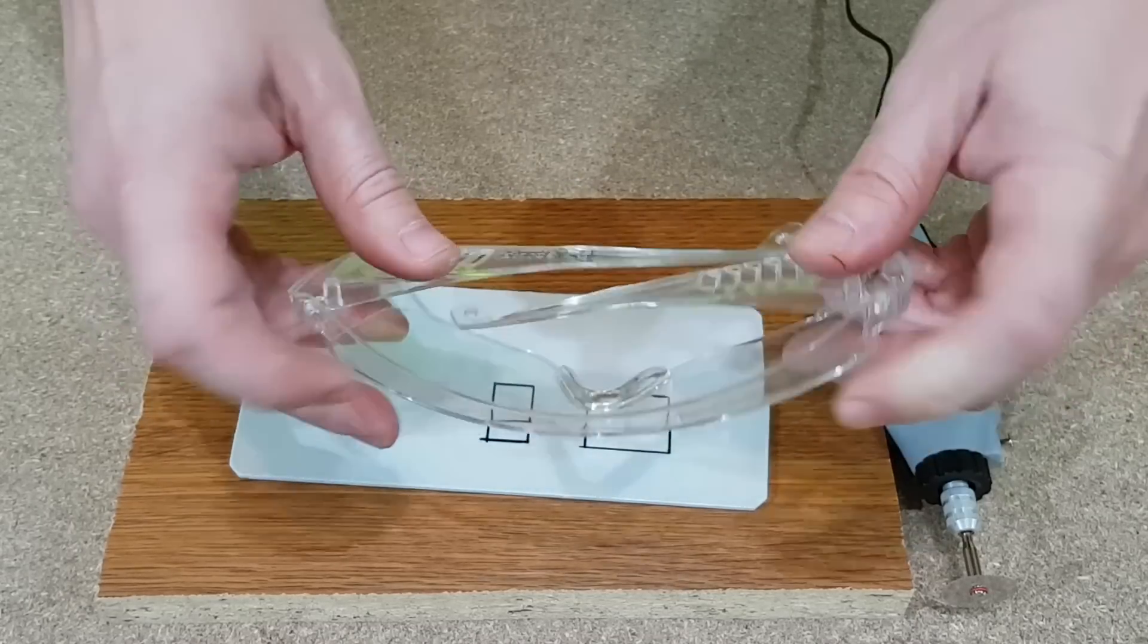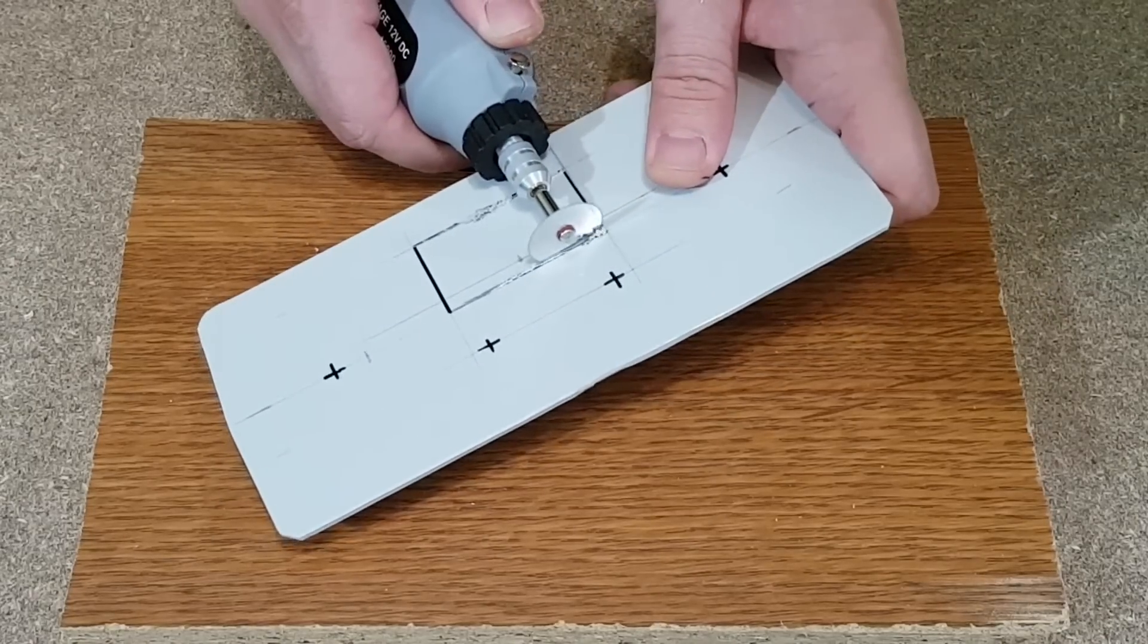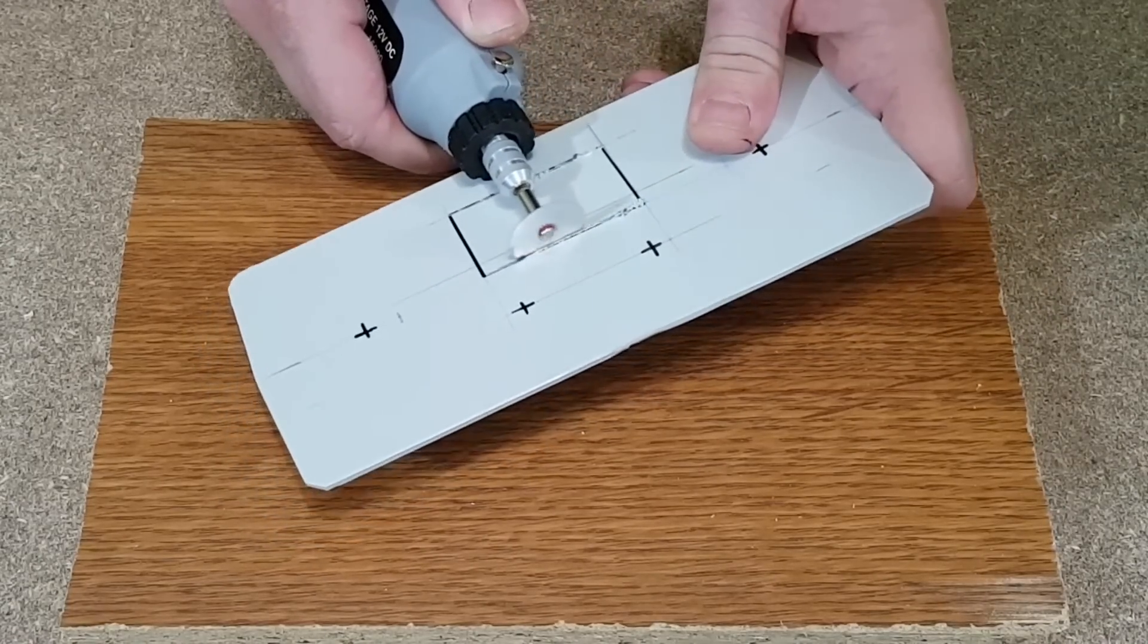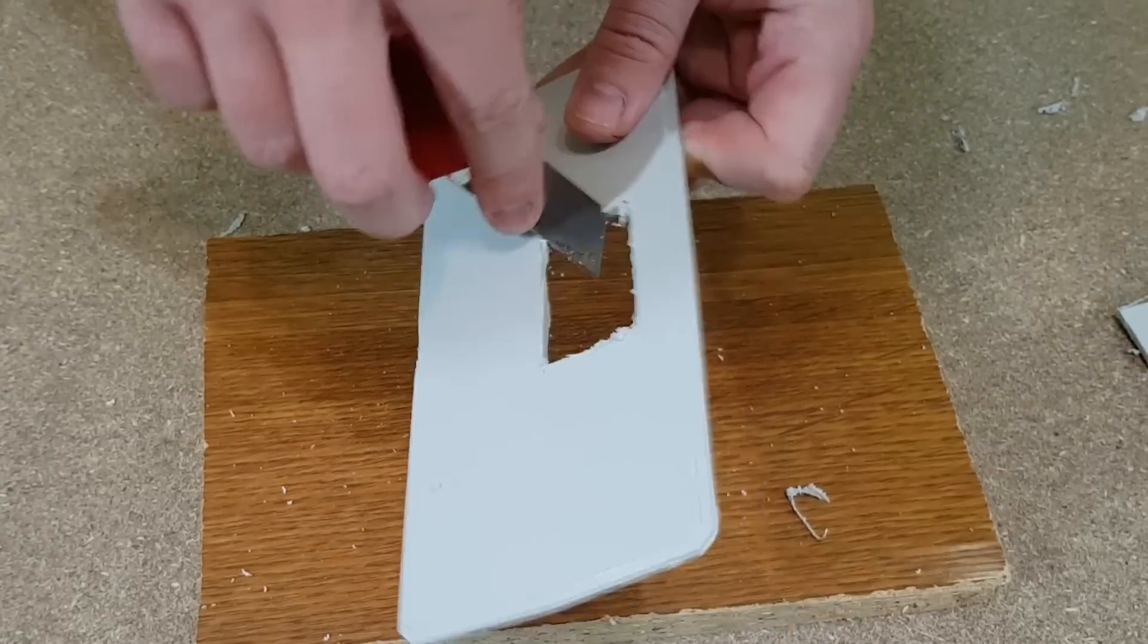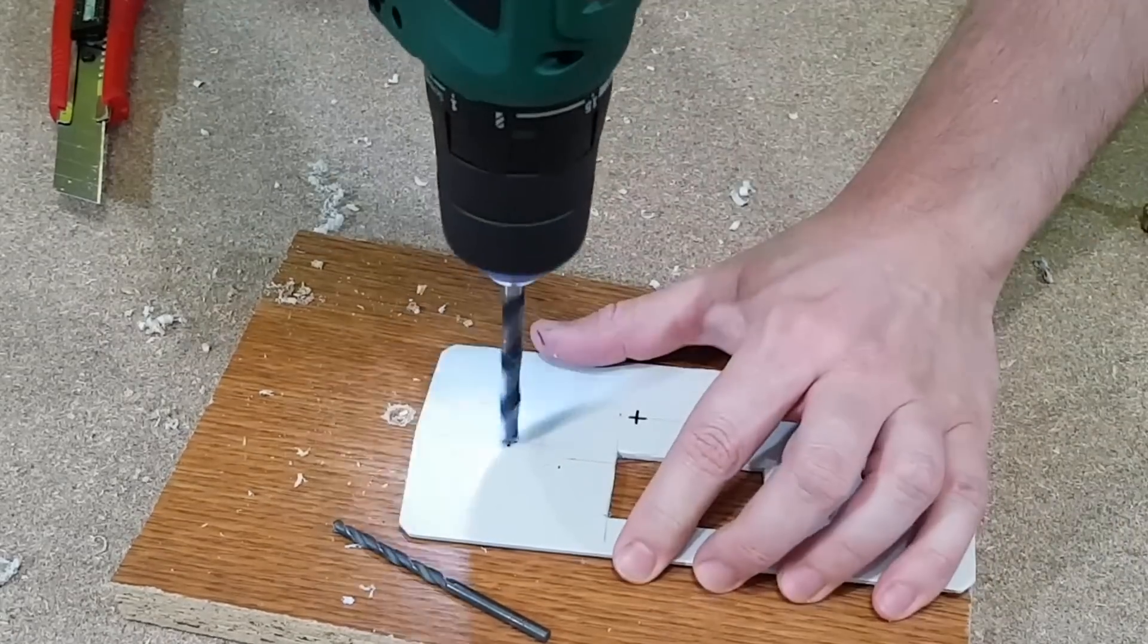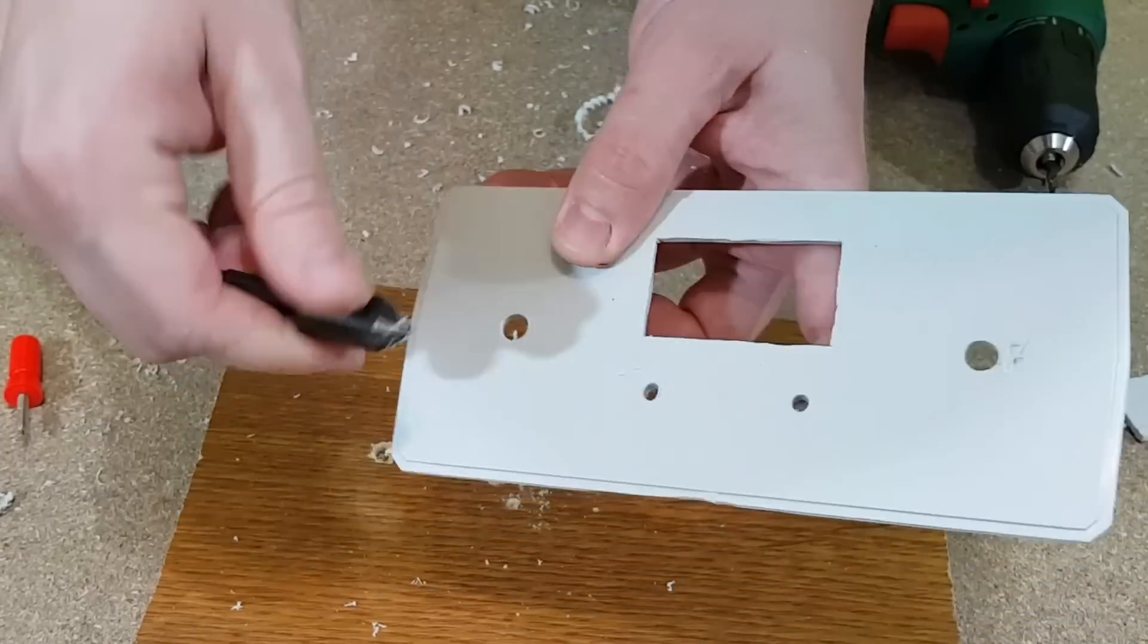I will use my dremel to cut these holes so safety goggles are mandatory. My tiny dremel struggles to cut this thick plastic panel. I will use a cutter to smooth out the edges. The round holes are easy to make, just use a power drill. Then you need the chamfering bit to smooth them out.